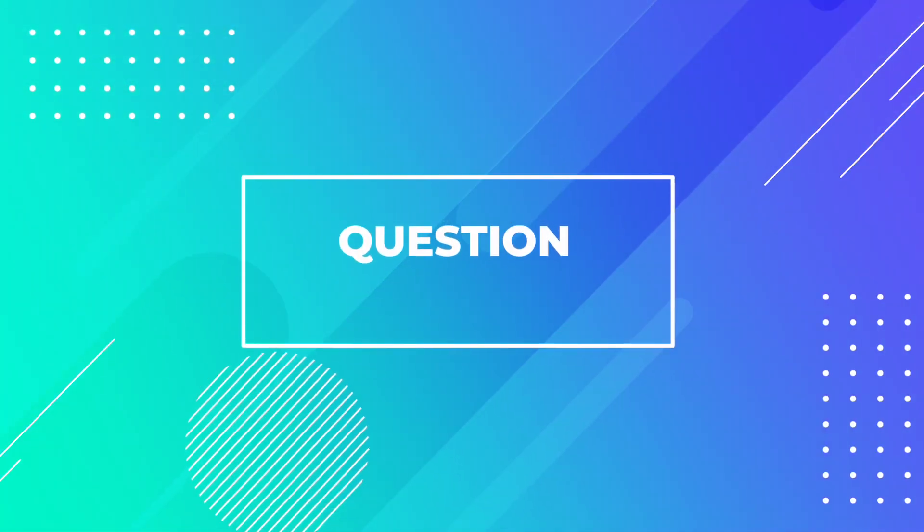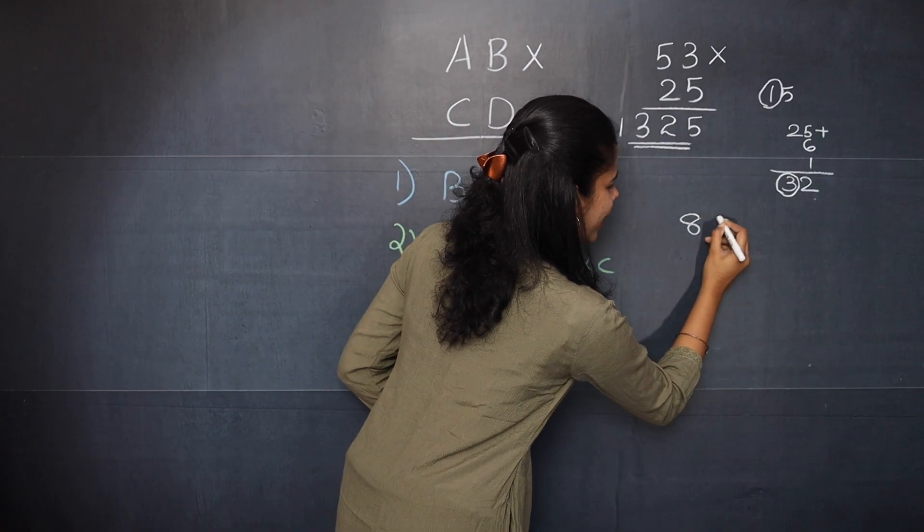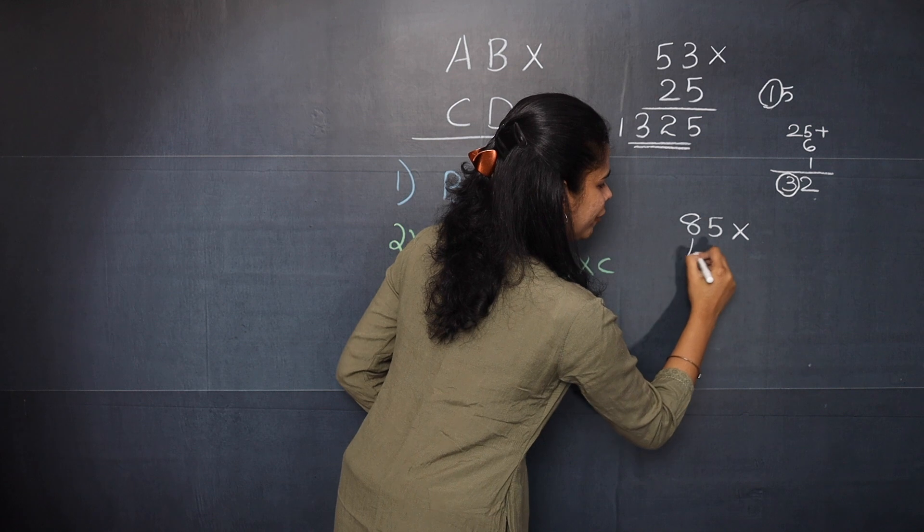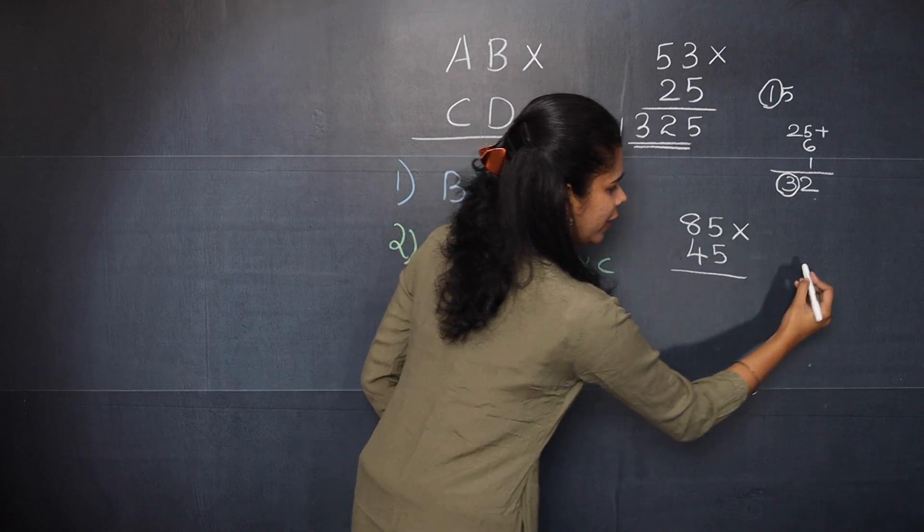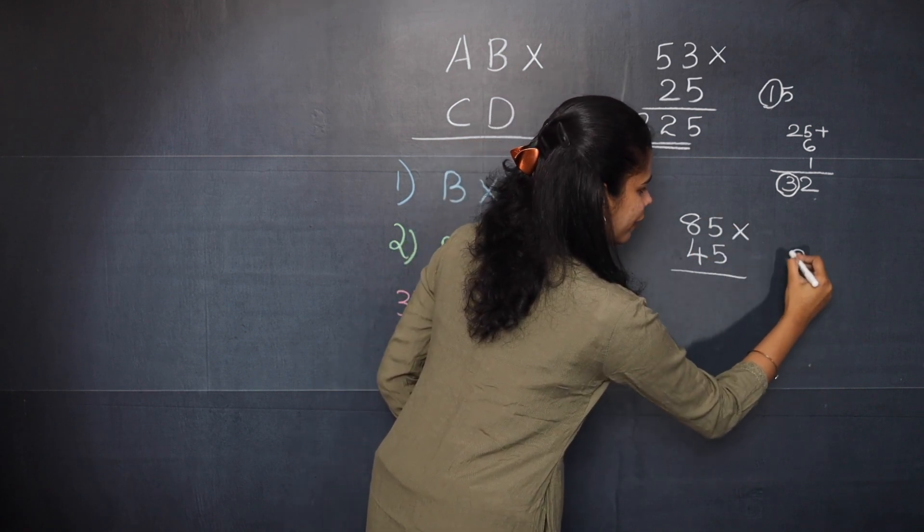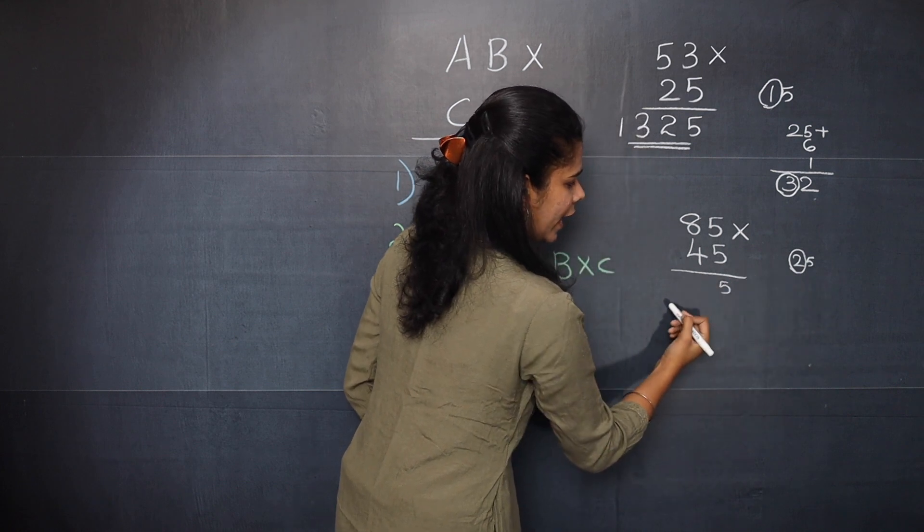Now let's move on to the last question. 85 multiplied by 45. So here 5 into 5, 25. So you will write 5 here. And 2 is the carry over.